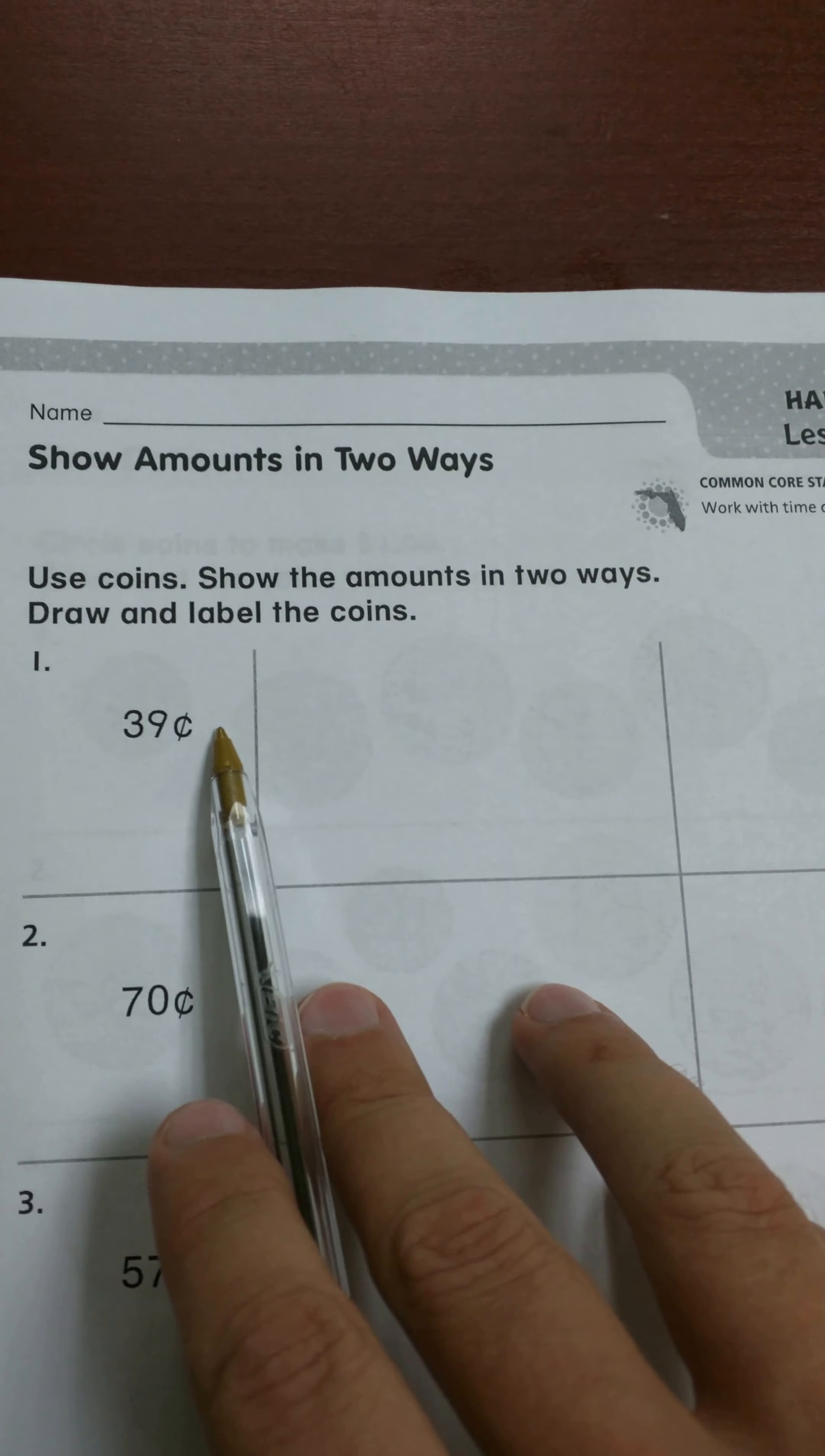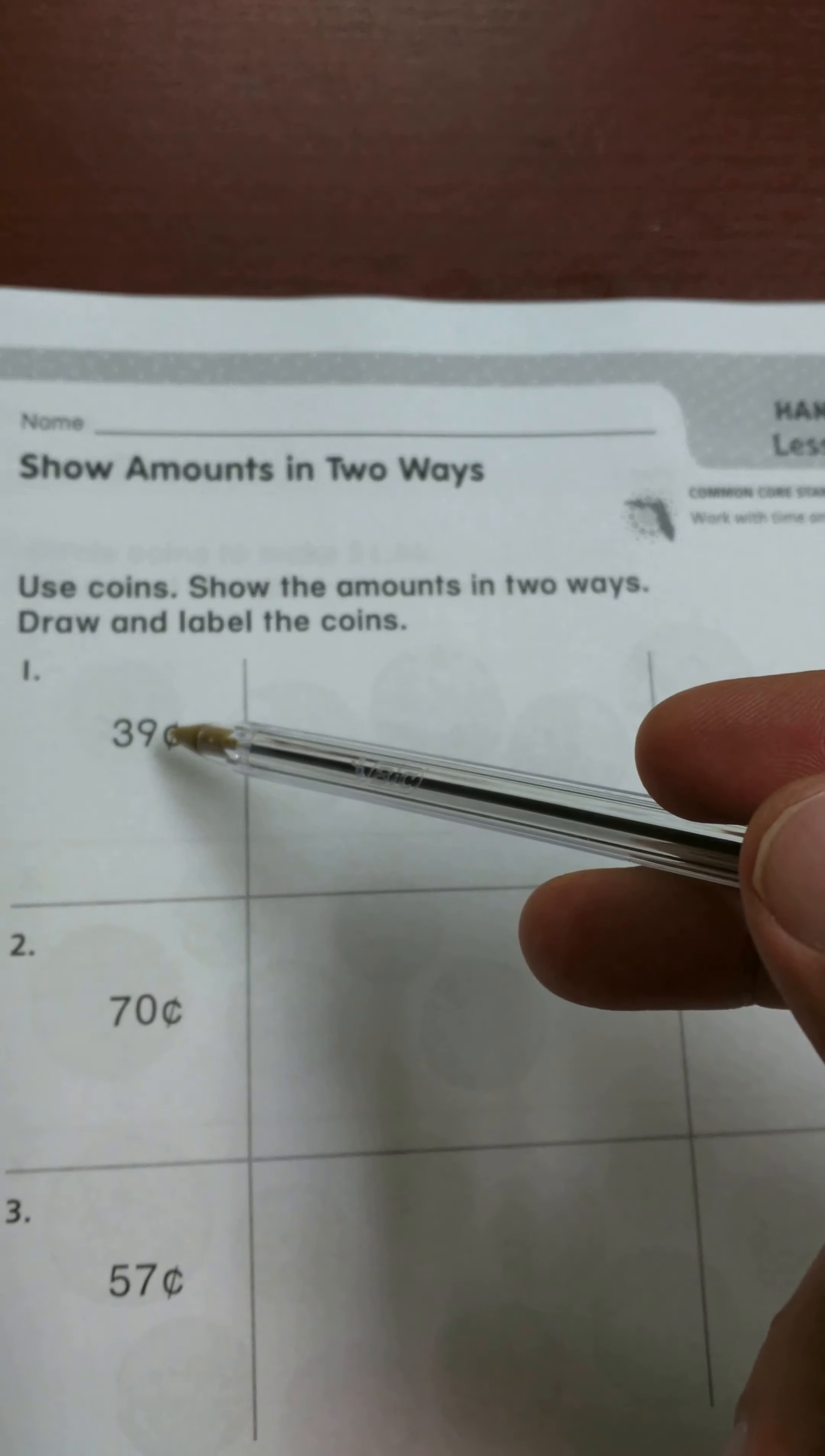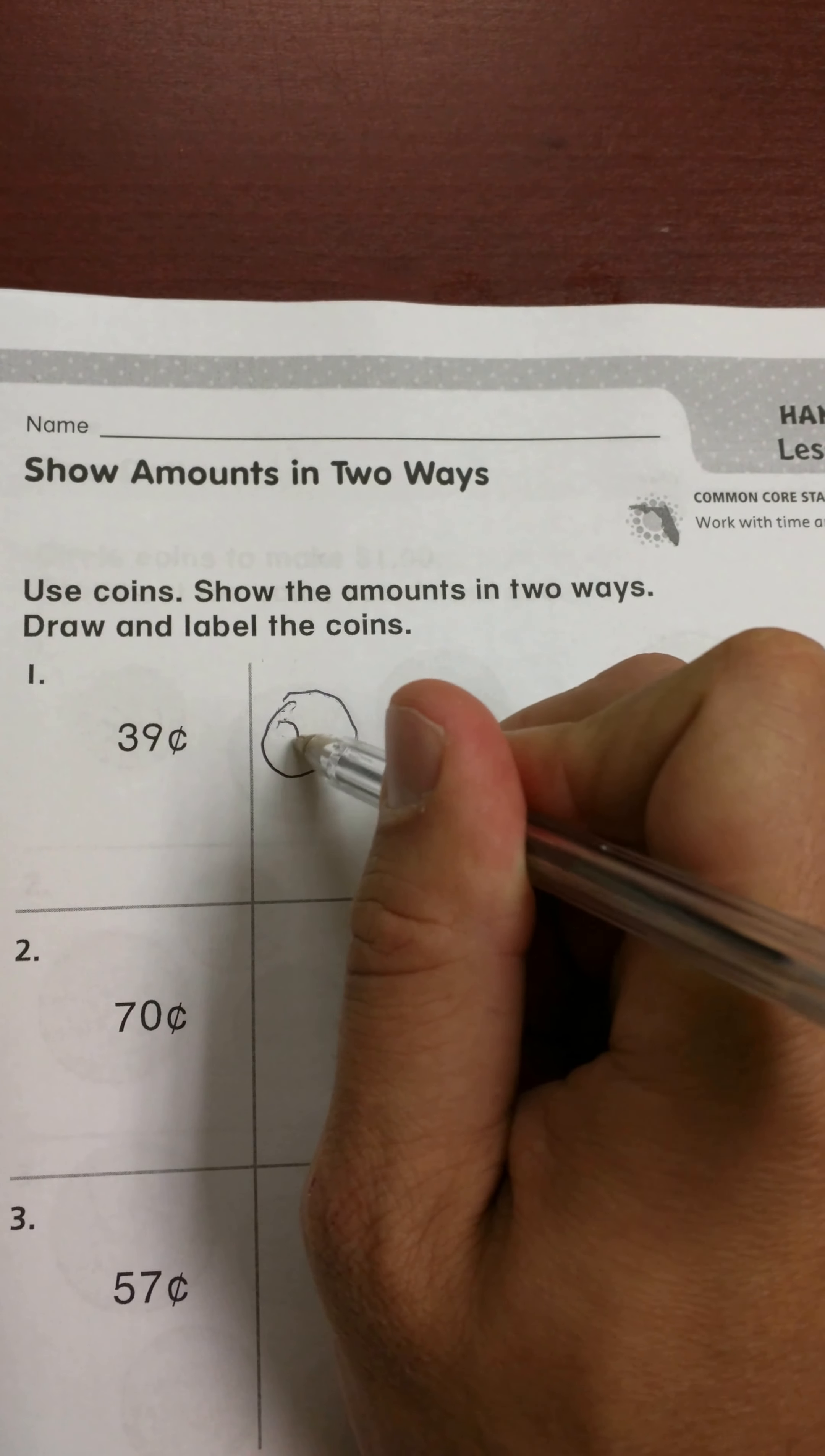So I always try to tell my students, ask yourself, can you use a quarter? Do you have more than 25 cents? So if the answer is yes, we're going to make a quarter. And I don't know how much I'm going to use, so I'm just going to start my first coin up here.